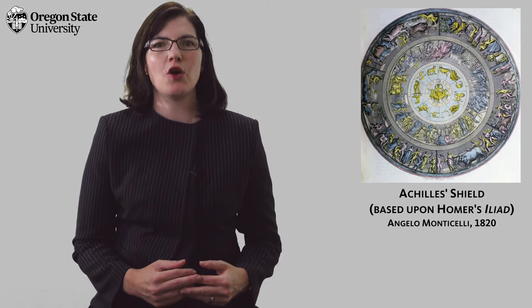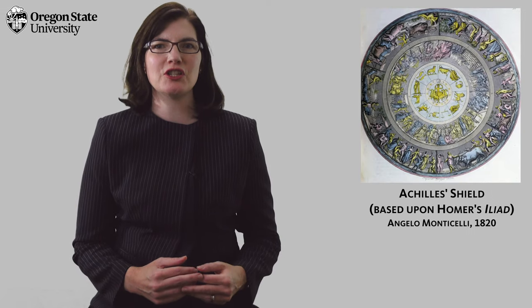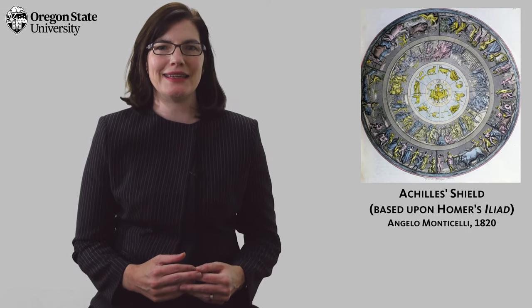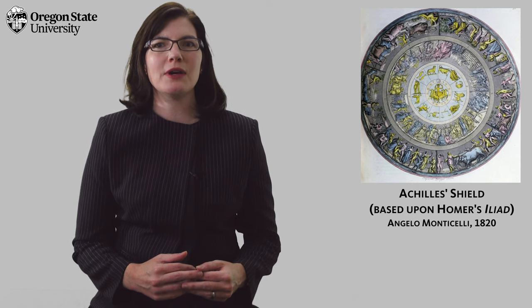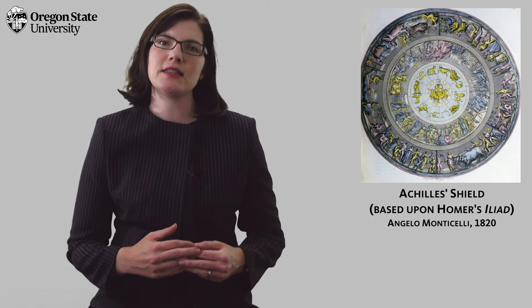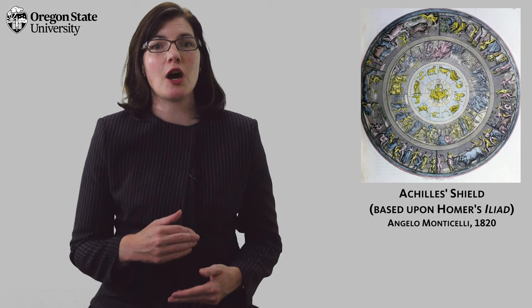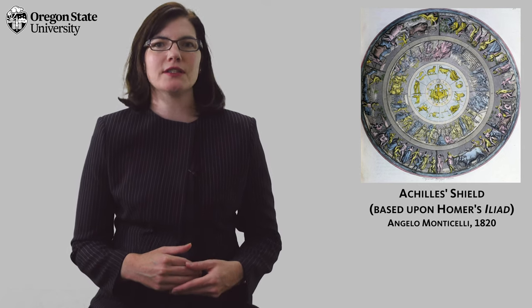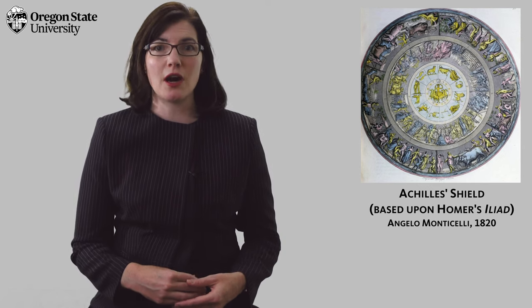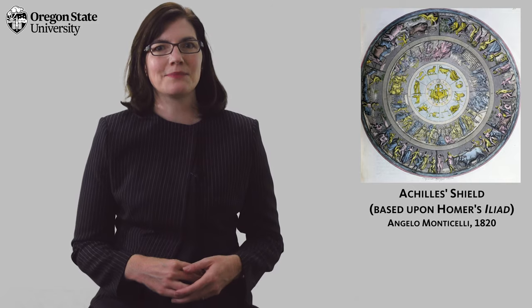One of the oldest examples is Homer's long description of Achilles' shield in the Iliad. Throughout that ekphrasis, the poet emphasizes the fact that the images described are images on a shield and even calls attention to the god Hephaestus' act of making that shield.